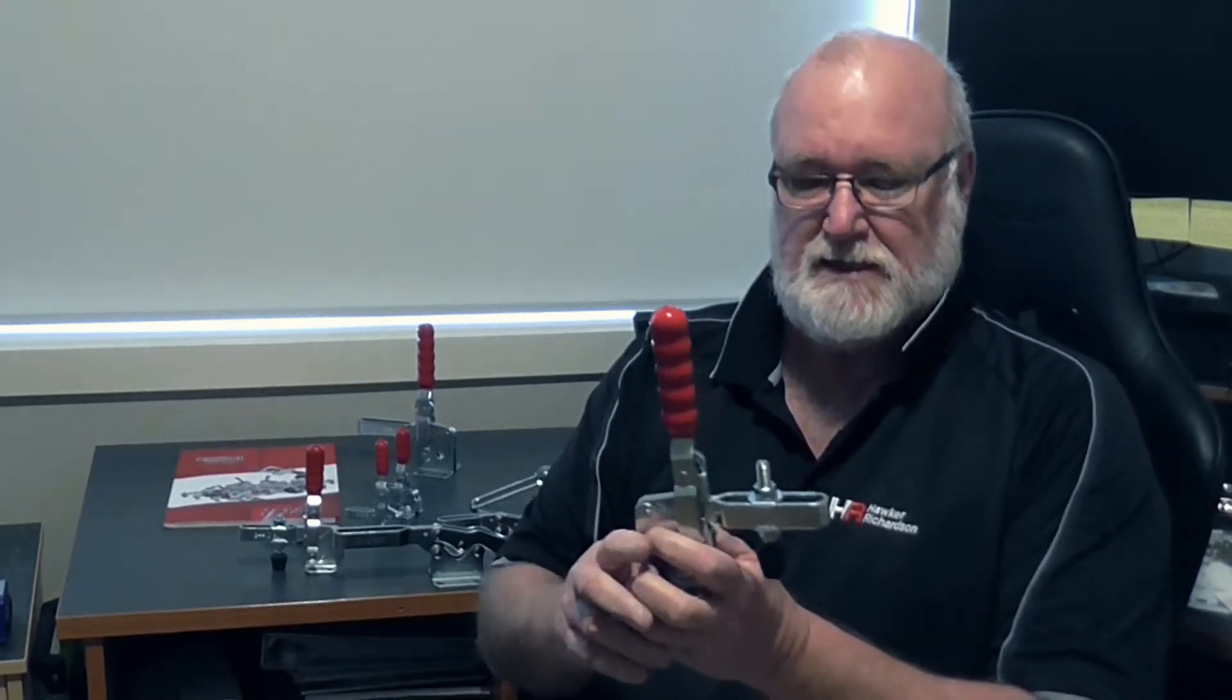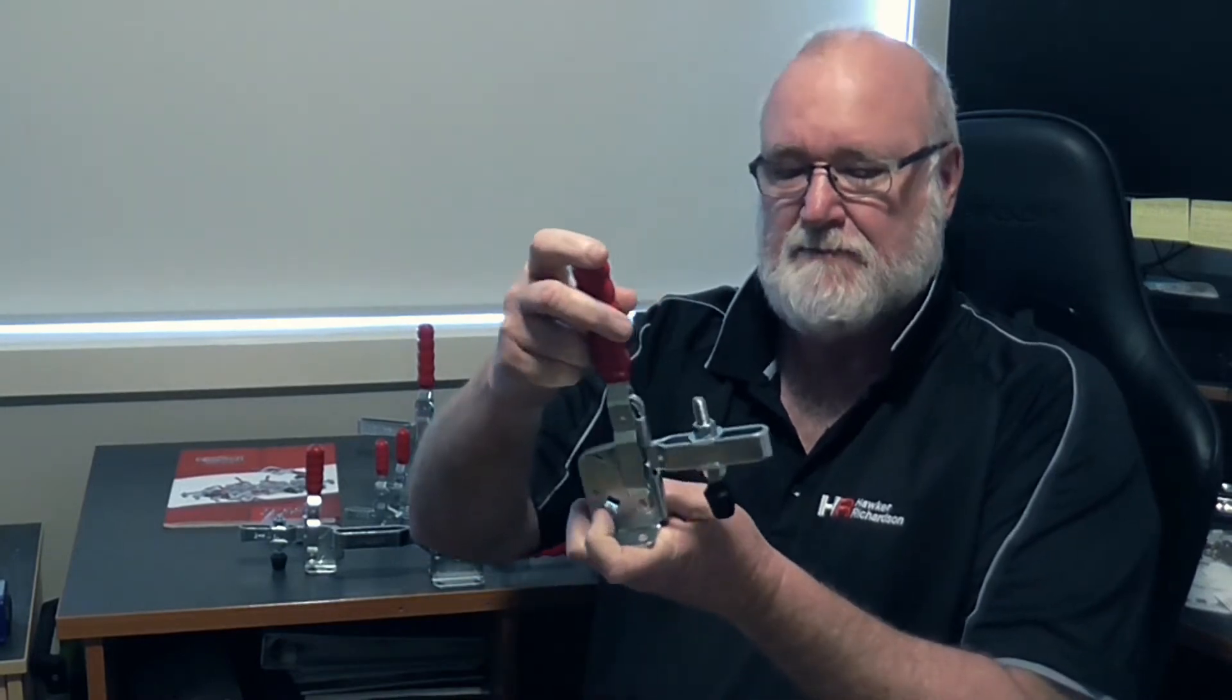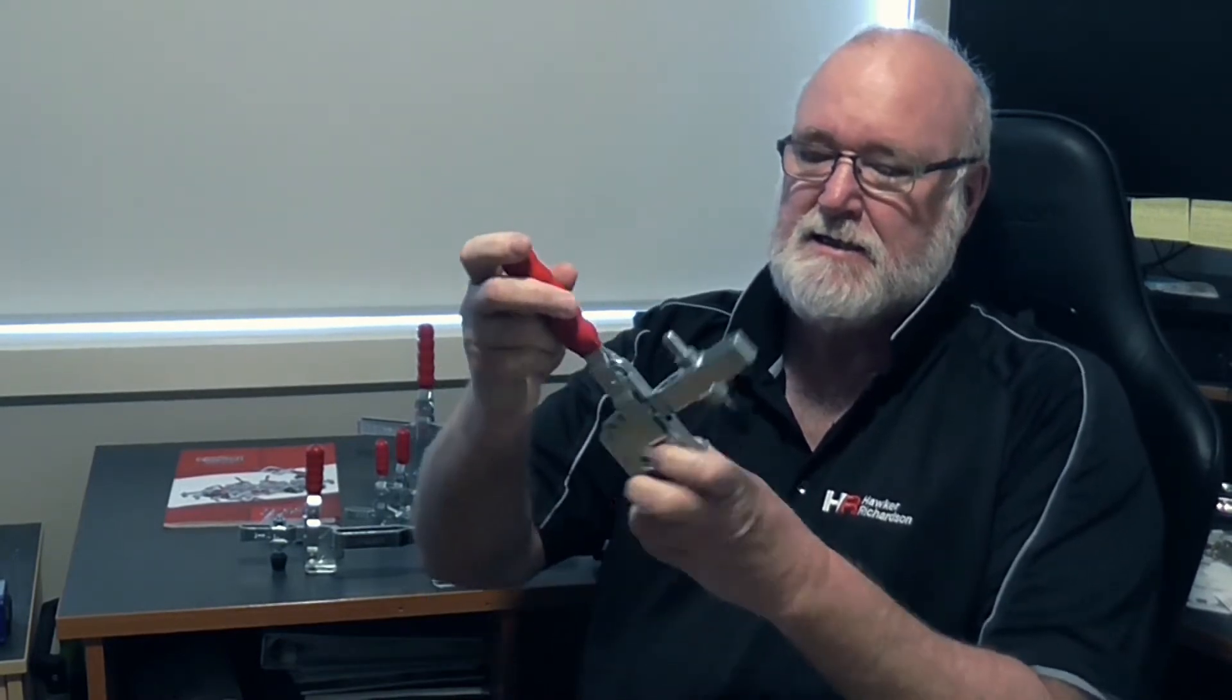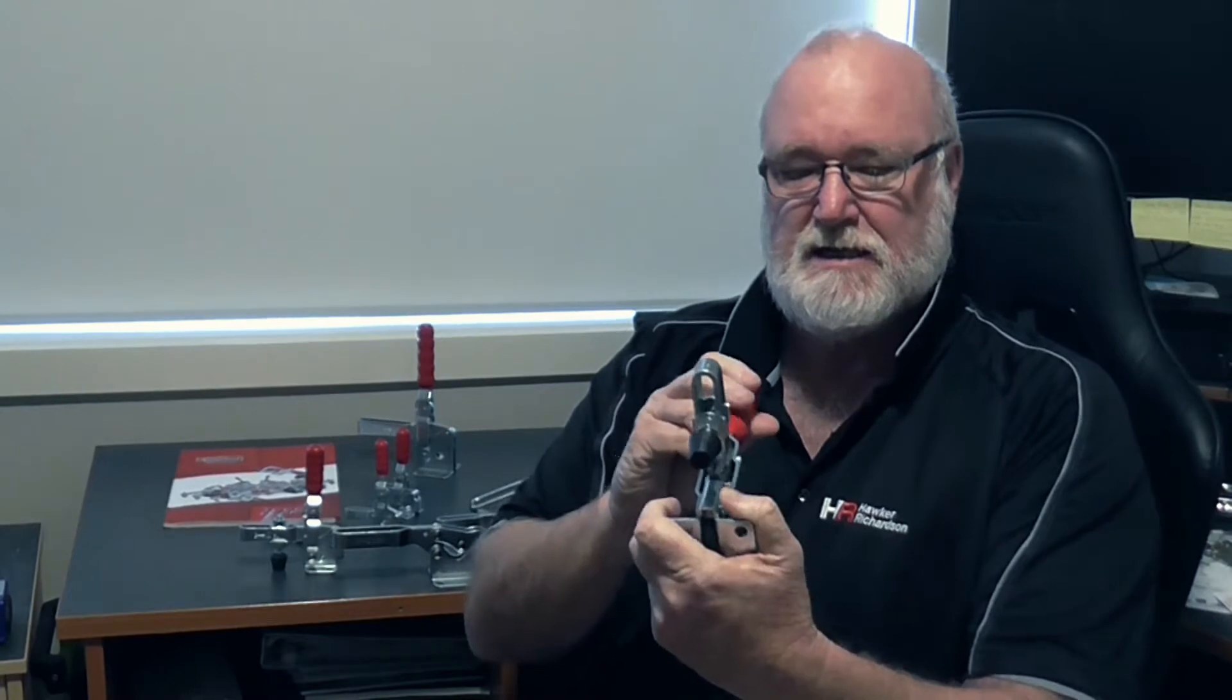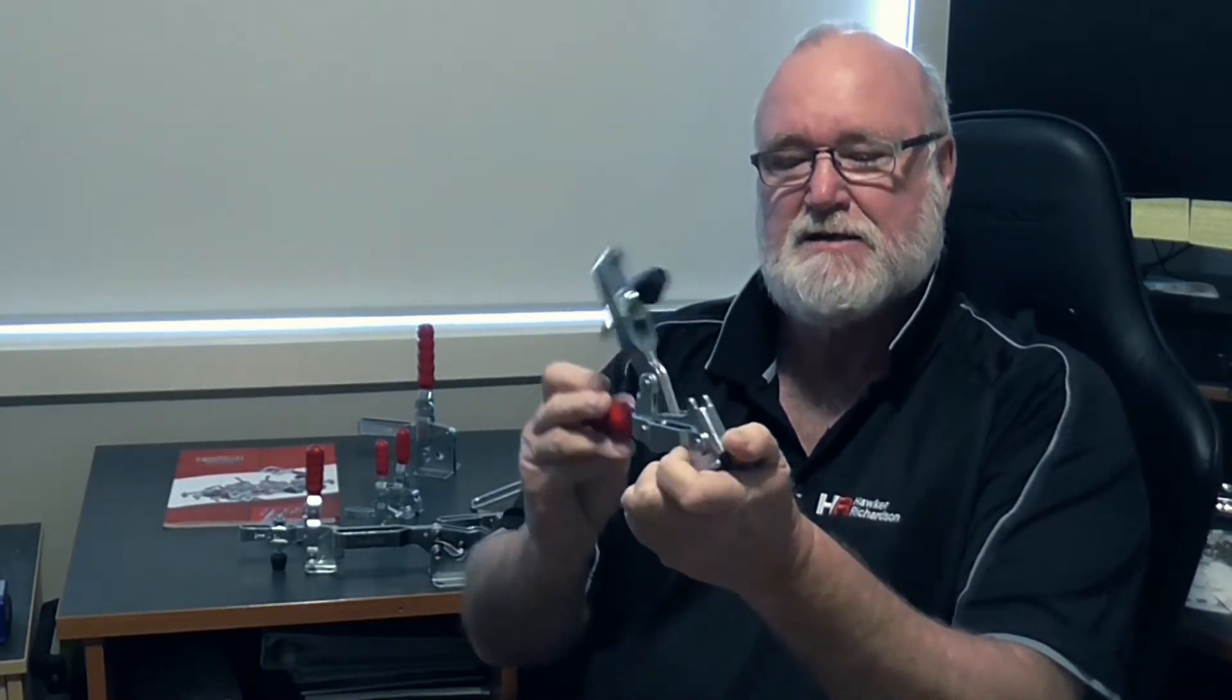Hello, my name is Martin Gillespie from Hawker Richardson and today I'd like to talk about our range of Good Hand toggle clamps. This is a fairly typical model, it's a vertical hold down clamp. It is very heavily built as you can see, the material used is quite heavy gauge.